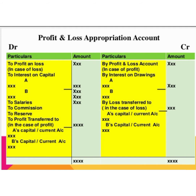After entering these transactions: on the credit side, first enter the net profit, then enter interest on drawings; on the debit side, enter interest on capital, salaries, commission, and amount transferred to reserves. Then find out the closing balance.